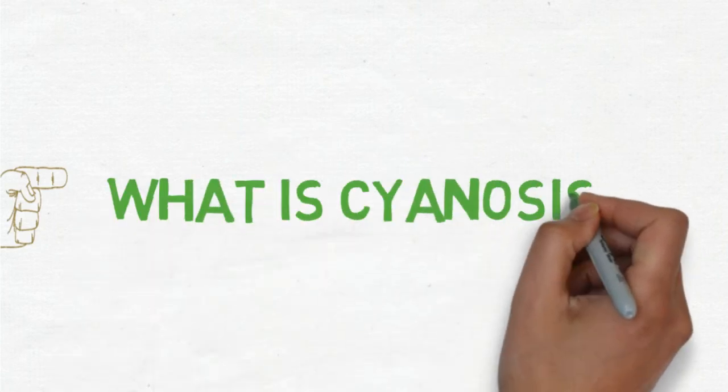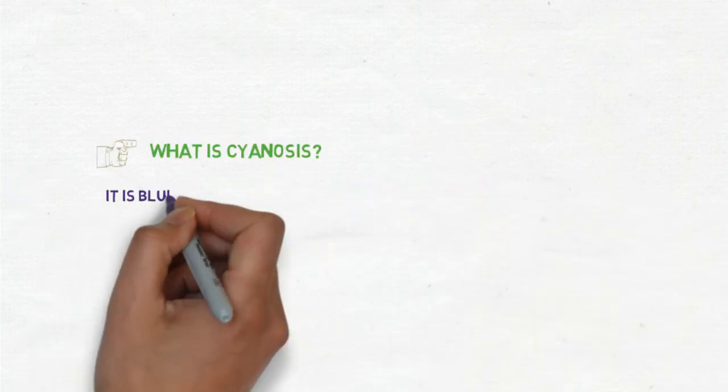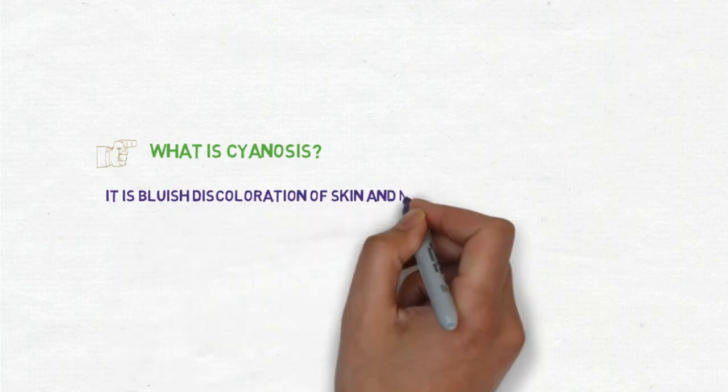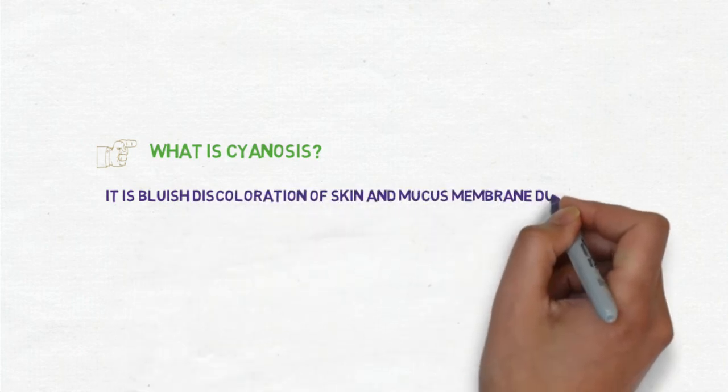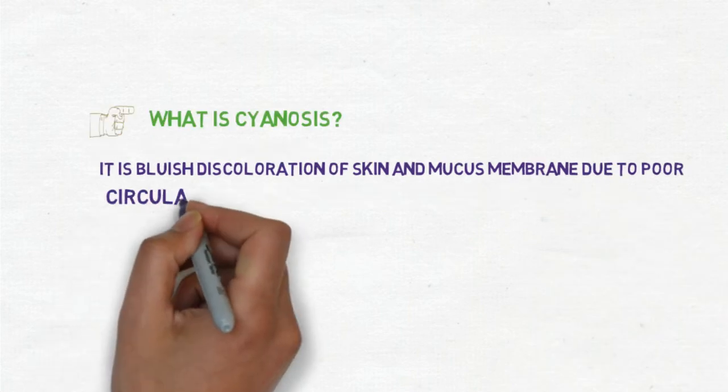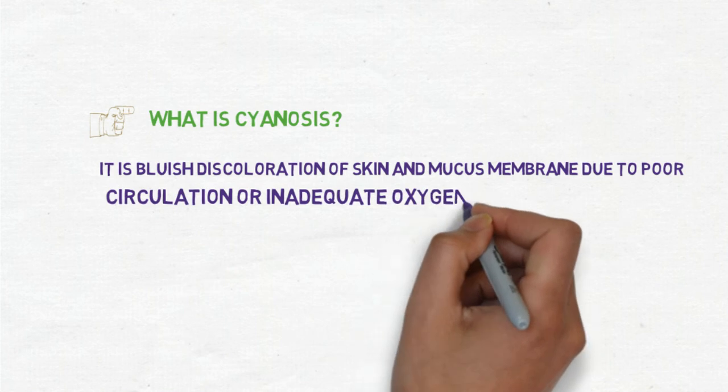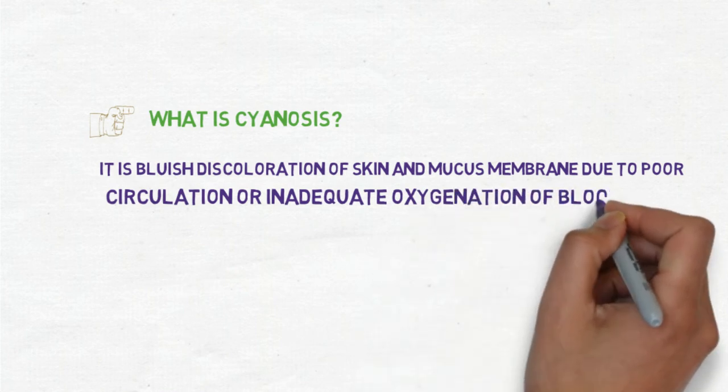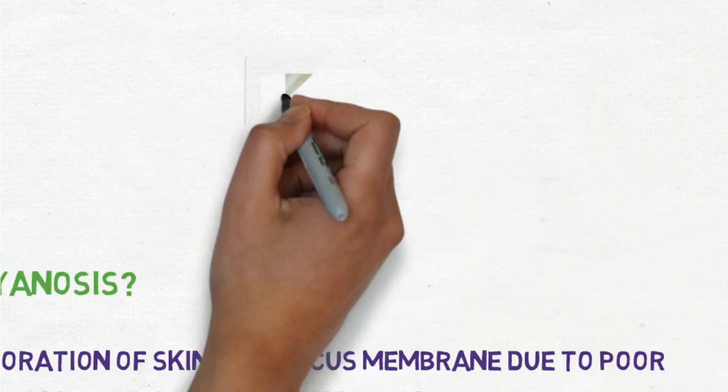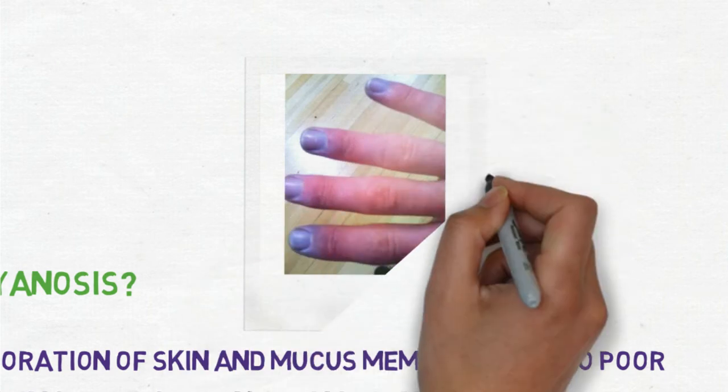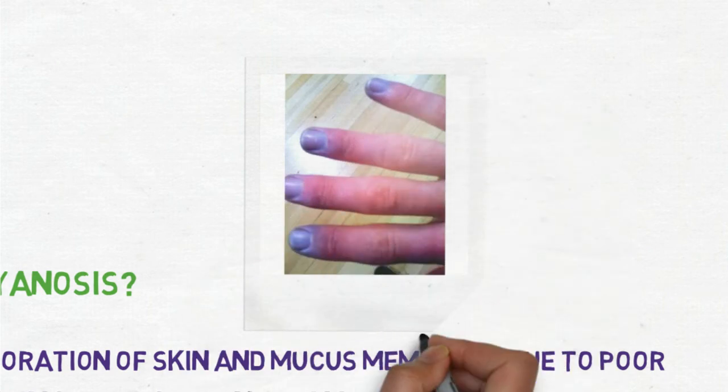By definition, it is bluish discoloration of the skin and mucous membrane due to poor circulation of blood or inadequate oxygenation of blood. Here is a picture depicting cyanosis. You can see here in the nail beds there is bluish discoloration.